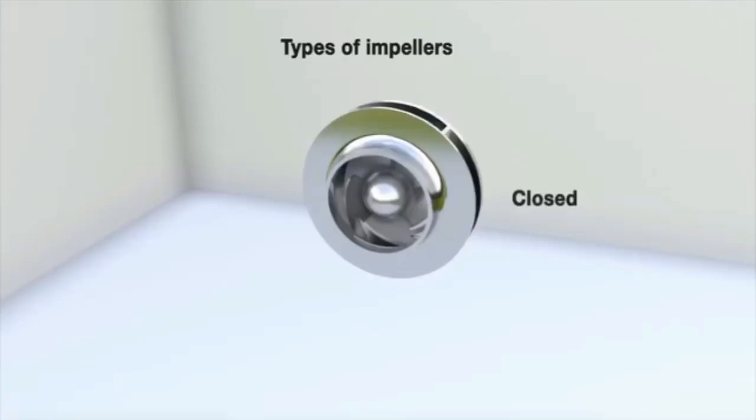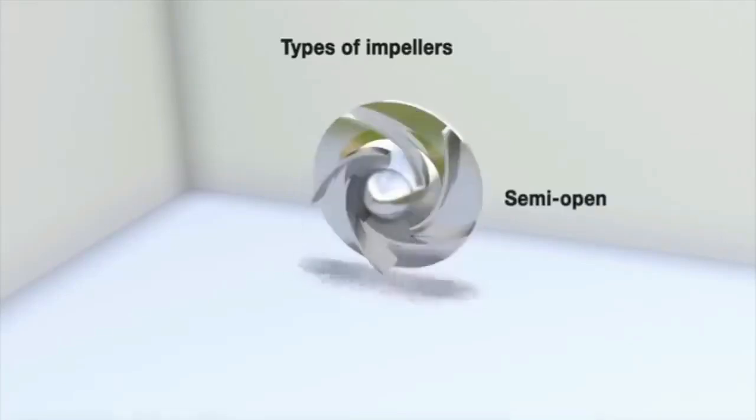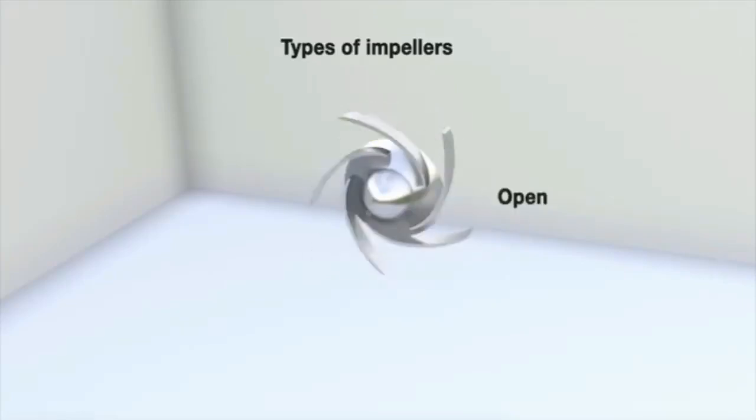Closed, with back and front discs and vanes in fairings. Semi-open, with the vanes free on the front side. Open, with the vanes free on both sides.